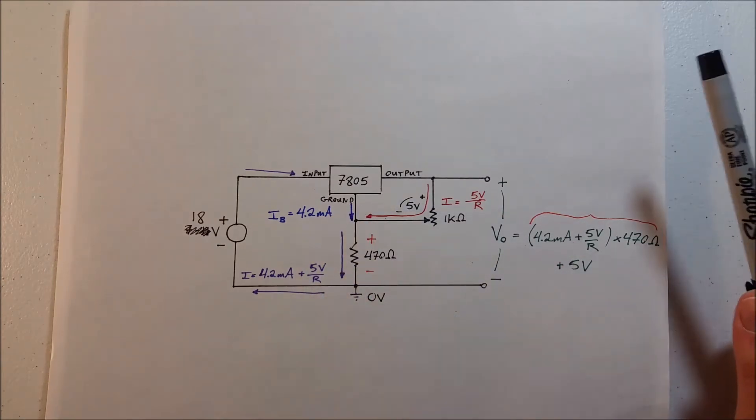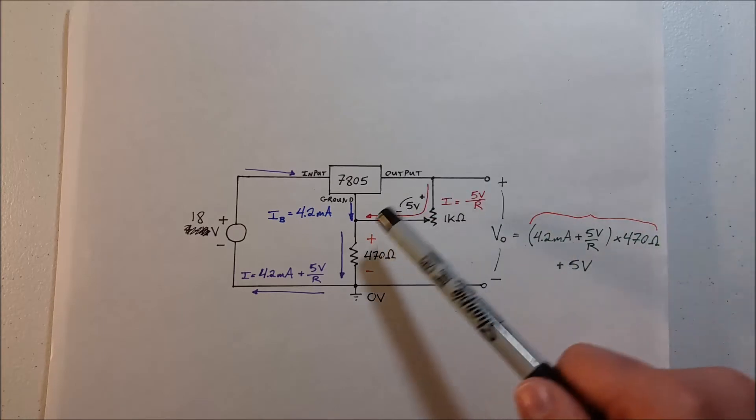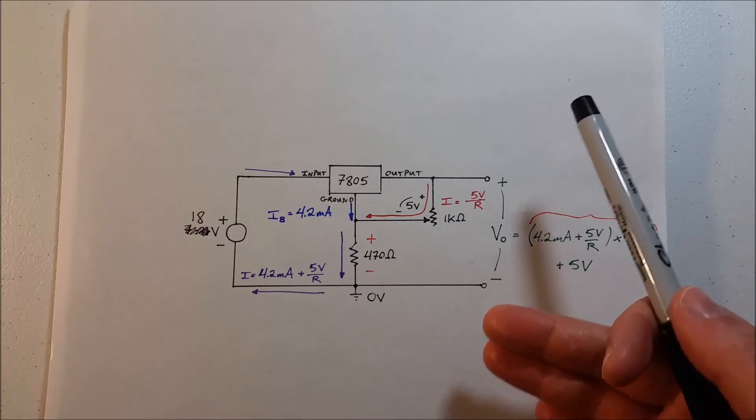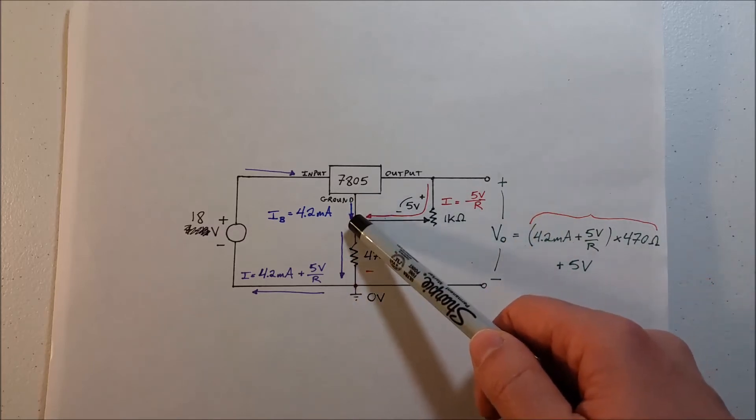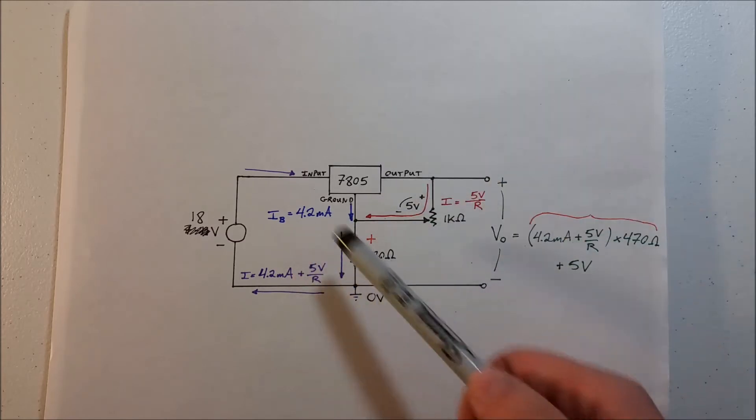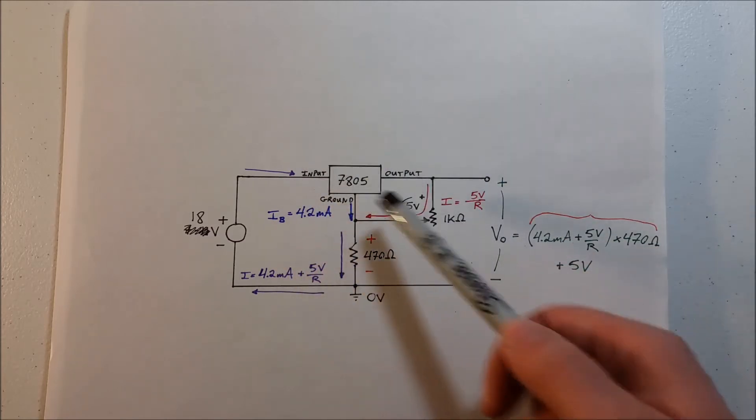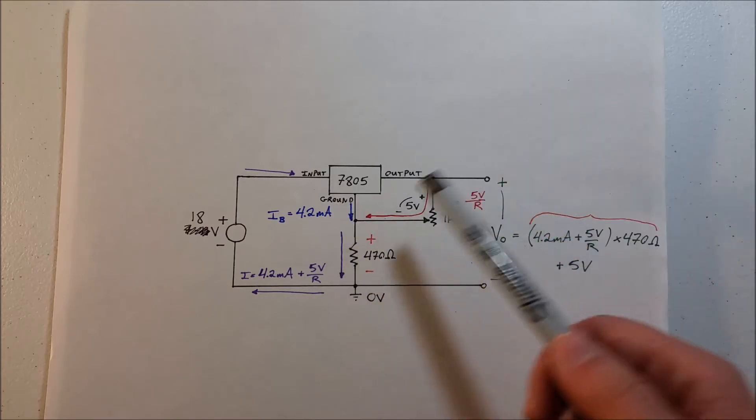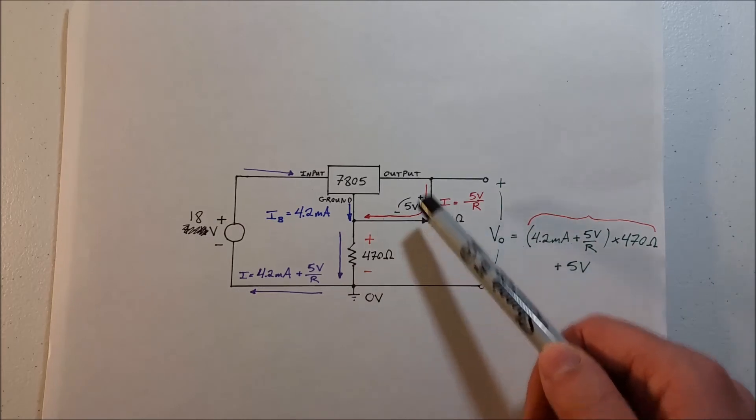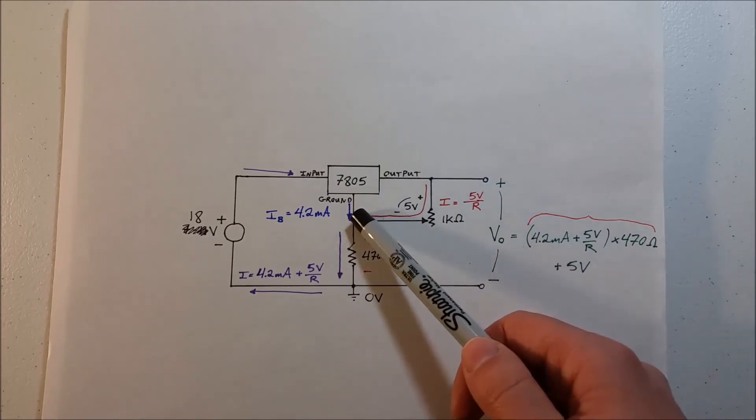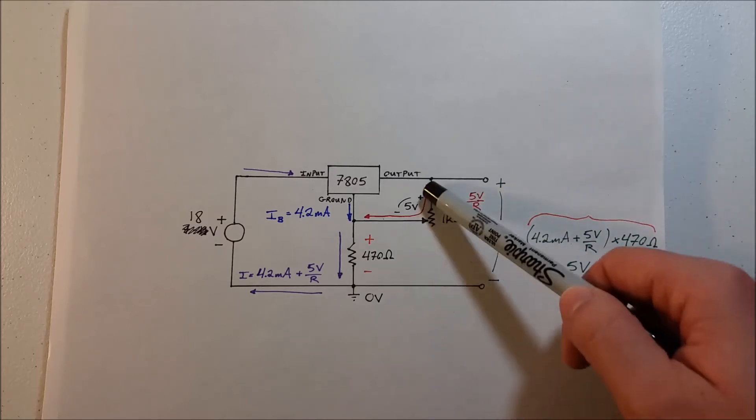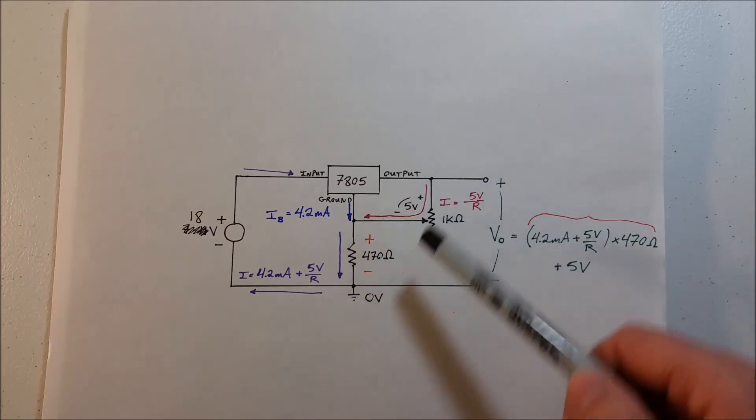Now to maintain this 5 volts between the ground and the output, the 7805 requires what's called bias current, and that's this blue current here. I looked it up in the data sheet, it's typically around 4.2 milliamps, so we'll just use that. That's the current it requires for its internal circuitry to work. Now this red current is the result of the 5 volts between the output and ground, this dropped across our potentiometer, whatever it's set at. It doesn't matter what this potentiometer's set at, you're always gonna have 5 volts across here and that will result in its own current: 5 volts over R, Ohm's law, simple, where R is whatever the potentiometer is set to.